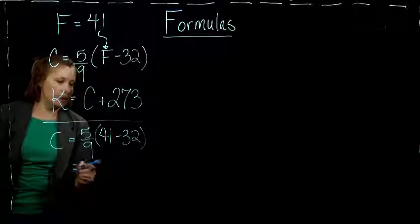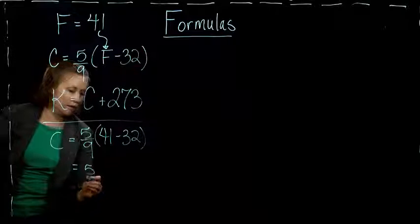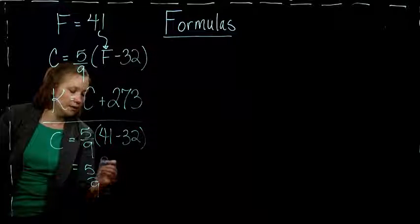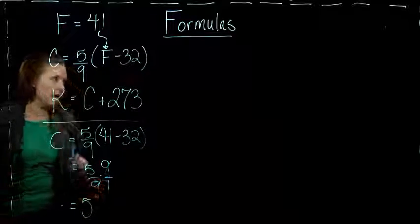Okay, and then so 41 minus 32 gives me 9. So I have 5 ninths times 9. Think of it as 9 over 1, and so we get just 5.